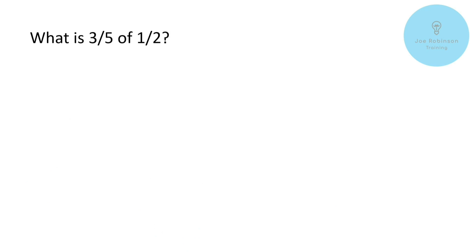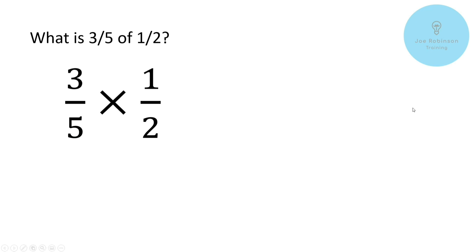Okay, so let's have a look at one more example for this video: what is three fifths of one half? Now we're going to basically skip the pizzas at this stage, because obviously we're not going to draw pizzas as an answer in an exam — we need the actual answer. So let's revert to pen mode now. We've got three fifths times one half — remember that's the same as three fifths of one half. So multiply the top two numbers: three times one gives us three at the top. Then five times two gives us 10 at the bottom. That can't be simplified any further, so three fifths of one half is three tenths. There is your solution — nice and simple.